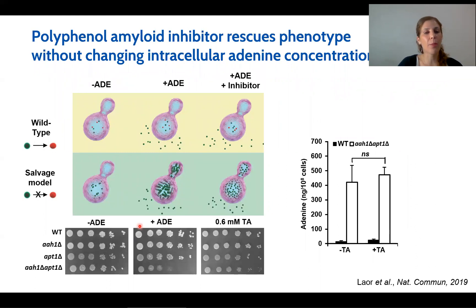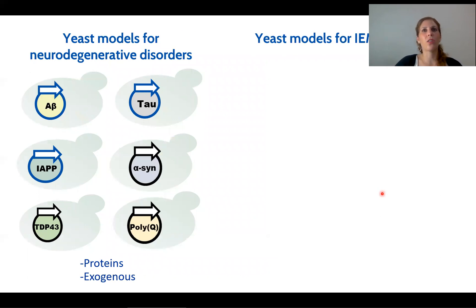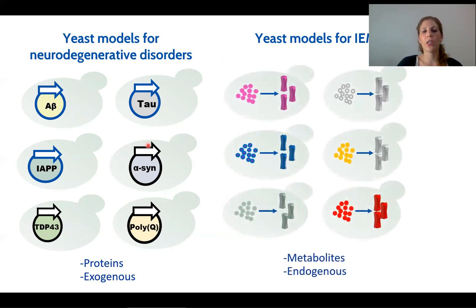Polyphenols have repeatedly been shown to inhibit the formation of protein amyloid fibers. As a proof of concept, we examined one such polyphenol, tannic acid, and we saw that its addition rescued the growth of the yeast — without changing the adenine concentration. This result implies that the cell growth inhibition was caused by toxic amyloid structures rather than simply the presence of high adenine levels. To summarize, existing yeast models for neurodegenerative disorders involve exogenous protein expression, whereas in our model we deal with metabolite aggregation with endogenous expression, actually mimicking what happens in the patient by manipulating the relevant enzyme, leading to accumulation of the relevant metabolite and formation of the amyloid structures.